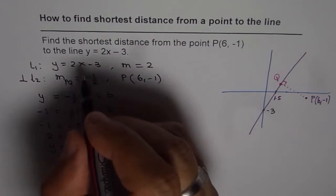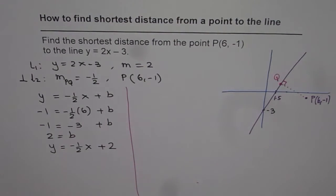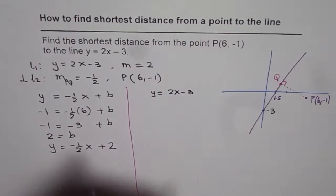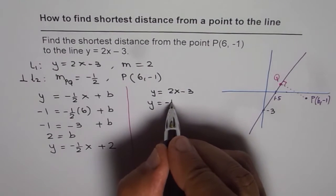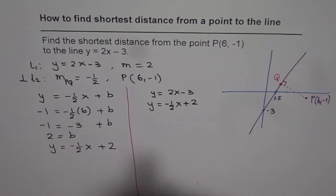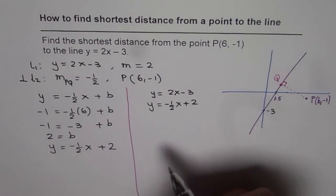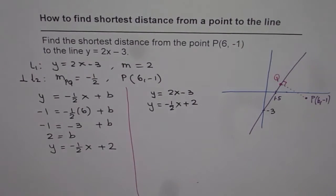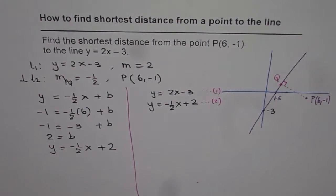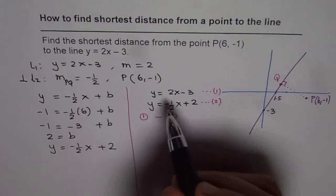Now let us work with these two equations to find the point of intersection. Line 1 is y = 2x – 3, and Line 2 (perpendicular) is y = –½x + 2. To find the point of intersection, we will subtract equation 2 from equation 1. By elimination, we can eliminate y and find x.